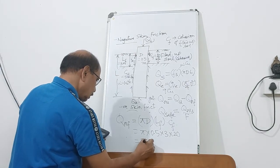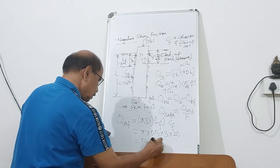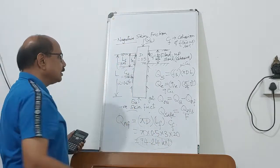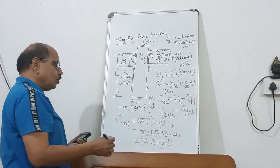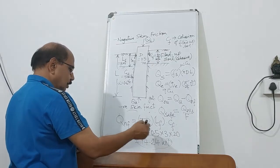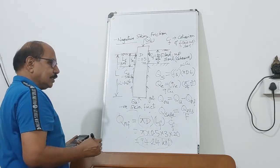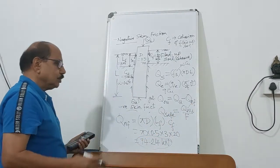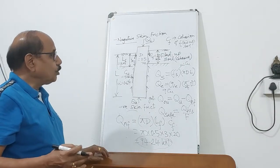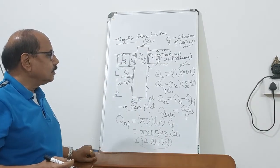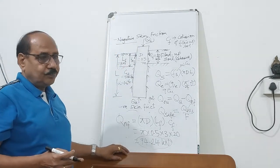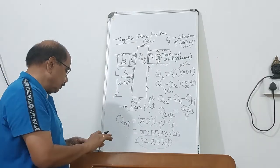This is the negative force acting in the downward direction, and whatever QU you have calculated, you will have to deduct this QNF to get the value of QNU. This is how the negative skin friction should be computed and it is very important — if you don't take care of this part, it might happen that your pile may fail. Thank you very much.